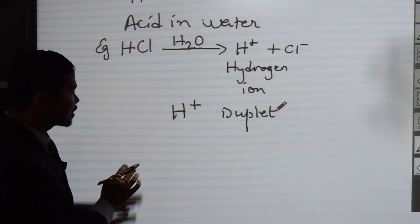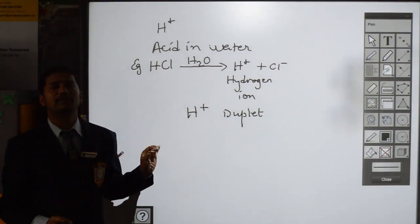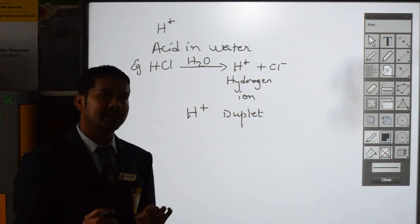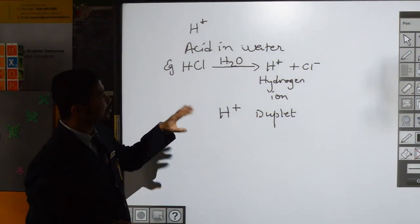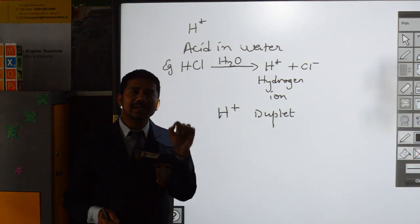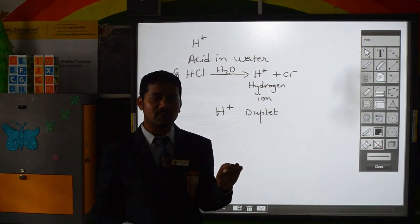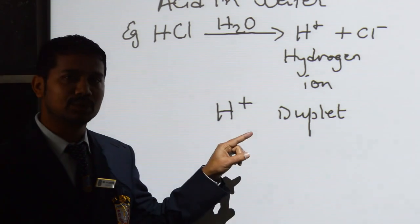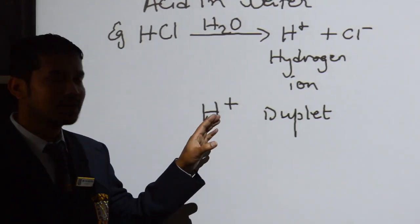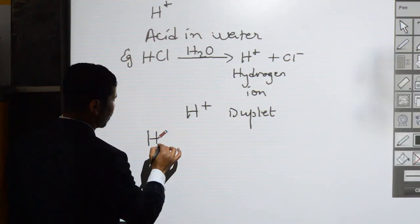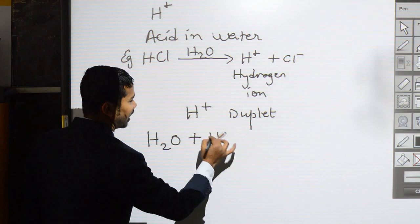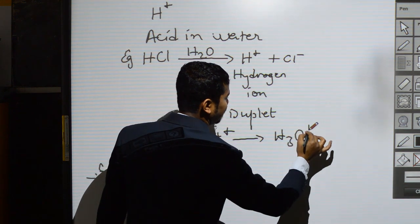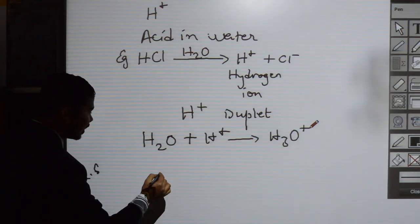Hydrogen ion is short of a pair of electrons — this is our second condition for forming a coordinate bond. So we have water molecule with at least one lone pair of electrons, and hydrogen ion that is short of a pair of electrons, meaning water and hydrogen ion can combine.